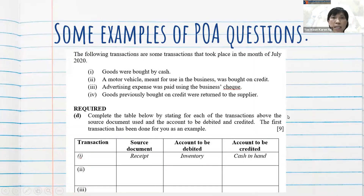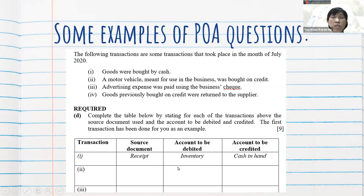This is another example of a POA Paper 1 question. For this question, students are required to state the source document used in the transactions, and how the transactions are recorded in the accounting books.